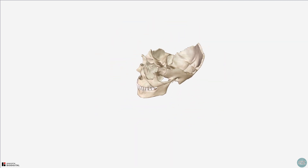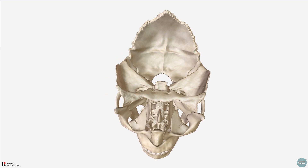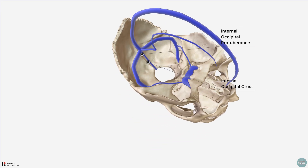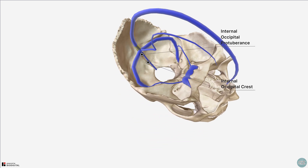I'm going to rotate the model 180 degrees, and we'll finish by taking a look at the internal surface of the occipital bone. Running upwards in the midline from the foramen magnum is the internal occipital crest. This ends at the internal occipital protuberance, which is formed in relation to the confluence of venous sinuses. I've added in the venous sinuses of the brain, and you can see that the confluence of sinuses is where the transverse, sagittal, and straight sinuses meet.